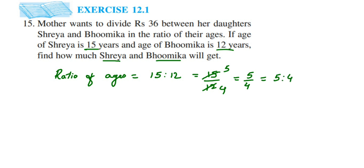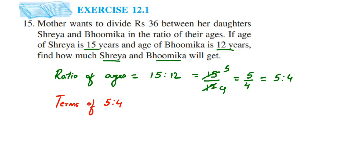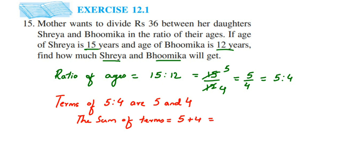Now we need to find how much part goes to Shreya and how much goes to Bhumika. Five parts go to Shreya and four parts go to Bhumika — but out of how much? In the ratio 5 is to 4, the terms are 5 and 4, so the sum of terms will be 5 plus 4 equals 9. We find this sum because five out of how much is not yet known — that's why we add the two terms.